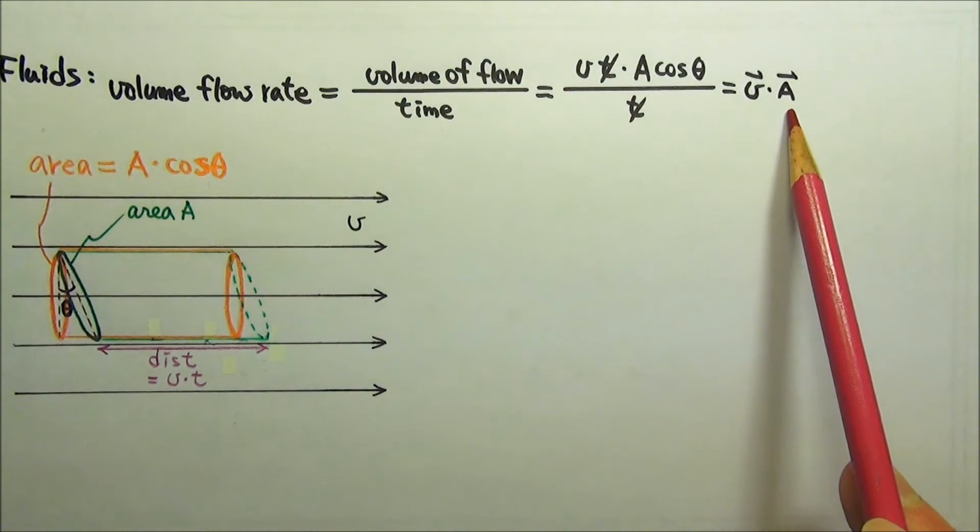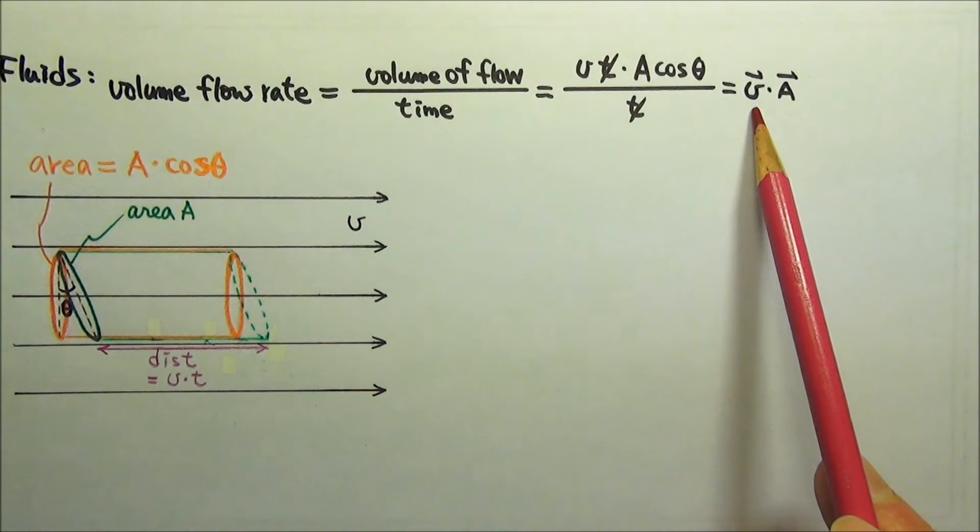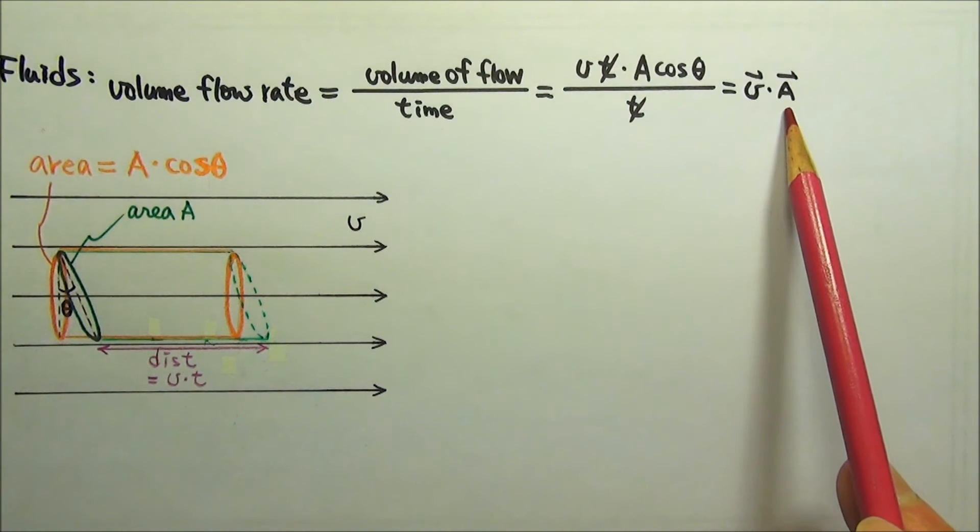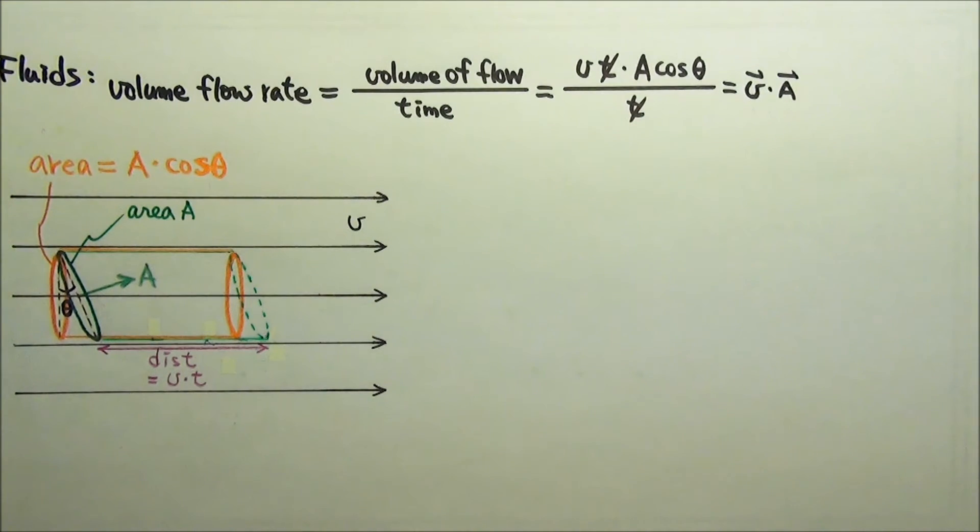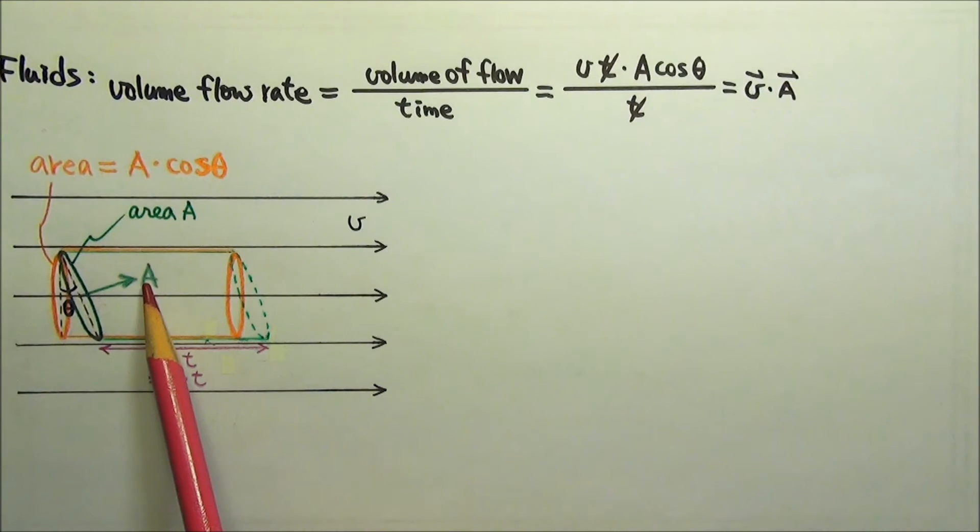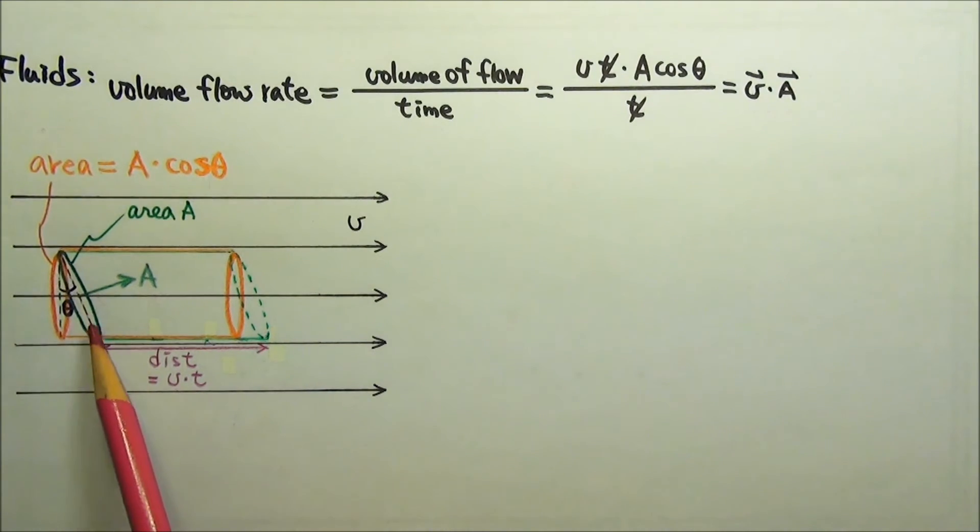V, the velocity, is a vector, but what about the area? Usually, area is a scalar, but here, area is a vector. And we use its normal vector for the direction of A. Normal means perpendicular, so normal vector is a vector that is perpendicular to the area.